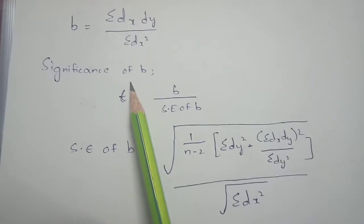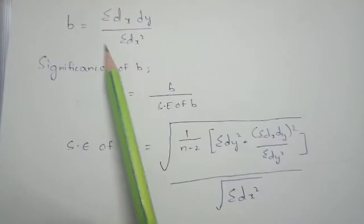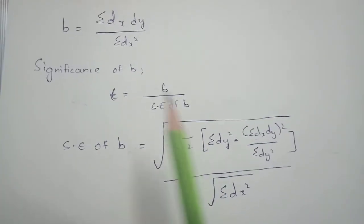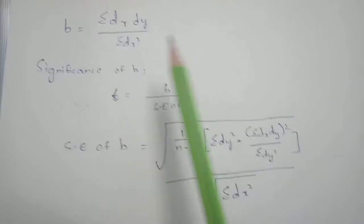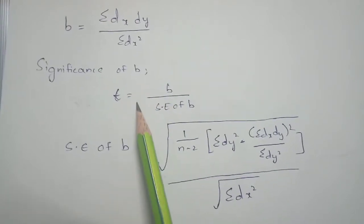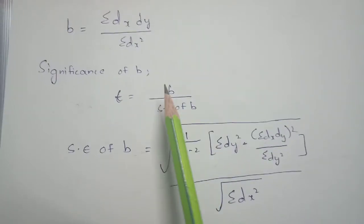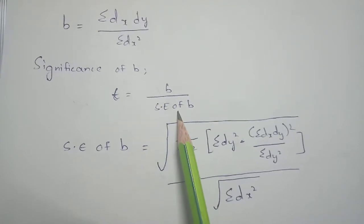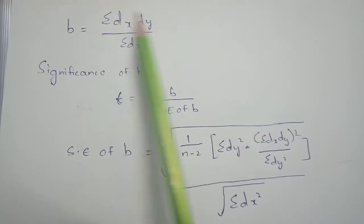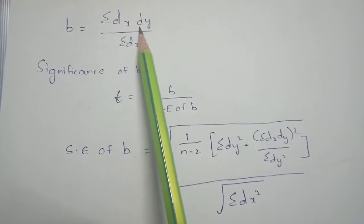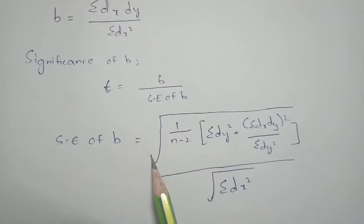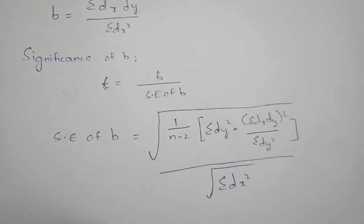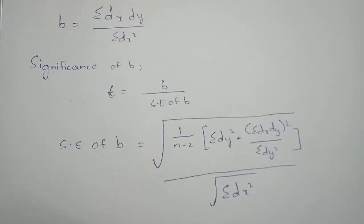After calculating the regression coefficient and the significance of B, you apply: T equals B divided by significance of B. The answer from the regression coefficient divided by the significance of B gives you the final answer.